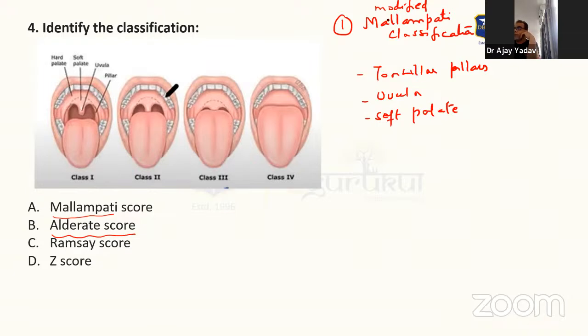These three structures we see. But in modified Mallampati, we see fourth structure and that is fauces. Fauces, you know, is the entry point to oropharynx. So we see these structures.